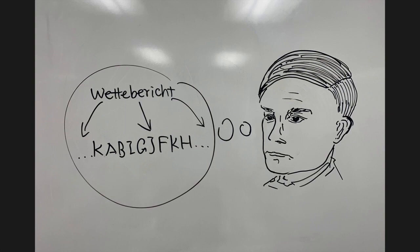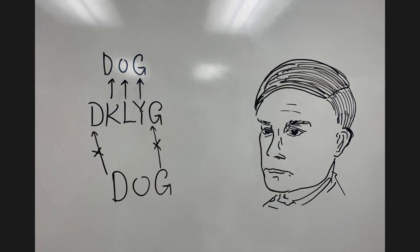Let's say I know the word dog is somewhere in the message D, K, L, Y, G. And then because D and G cannot be mapped to themselves, we know that D becomes K, O becomes L, and then G becomes Y.